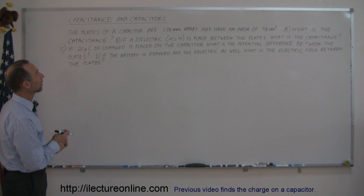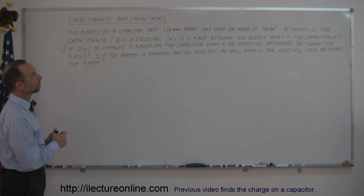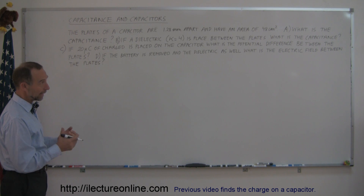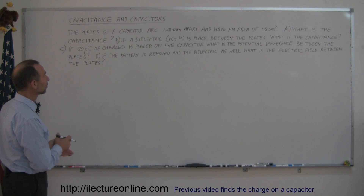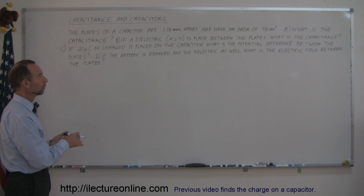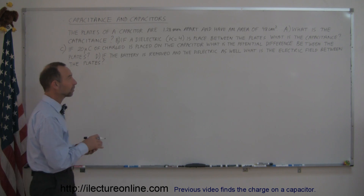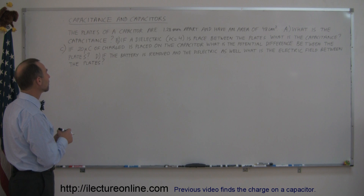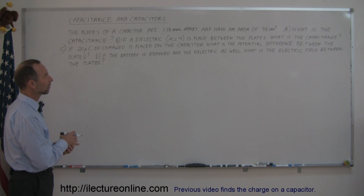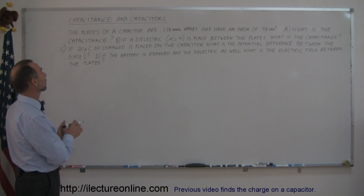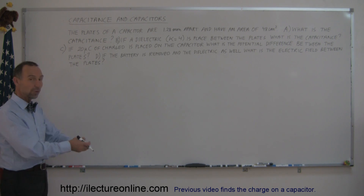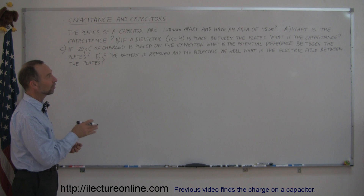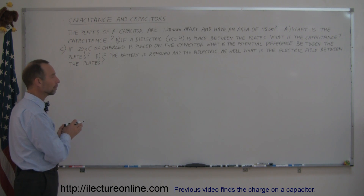The plates of a capacitor are 1.28 millimeters apart and have an area of 48 centimeters squared. Part A: what is the capacitance? Part B: if a dielectric with K equals 4 is placed between the plates, what is the capacitance? If 20 microcoulombs of charge is placed on the capacitor, what is the potential difference between the plates? And if we remove the battery and also remove the dielectric, what is the electric field between the plates?